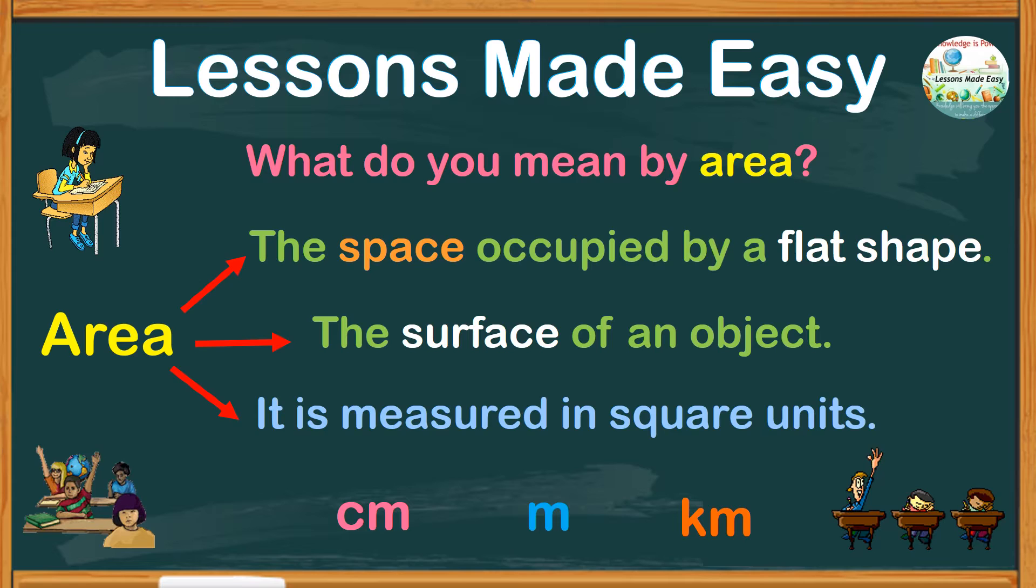Centimeters, meters, and kilometers are just some examples of units. When we say square units, this means they are being used twice—that's why you see the exponent 2. This can be read as square centimeters, square meters, and square kilometers.